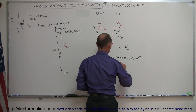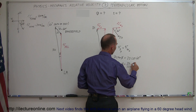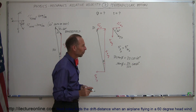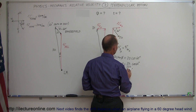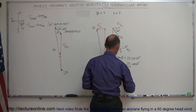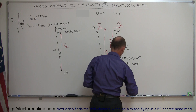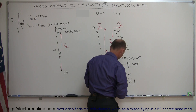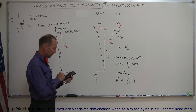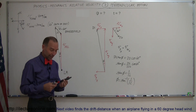Solving for phi: sine of phi equals 20 divided by 120 times cosine of 60 degrees. The cosine of 60 degrees is one-half, so this becomes 10 divided by 120, or 1 over 12. So sine of phi equals 1/12, meaning phi equals the arc sine of 1/12, which gives us 4.78 degrees.